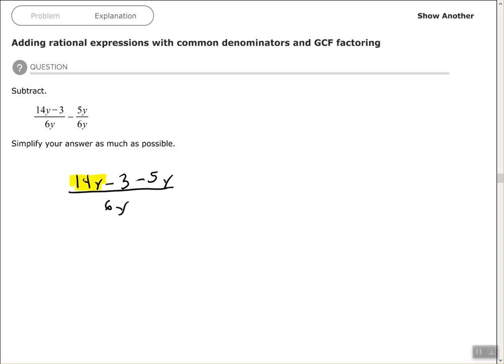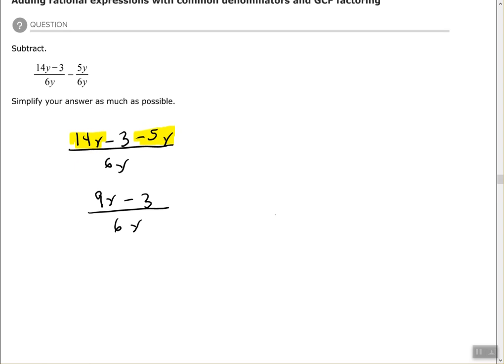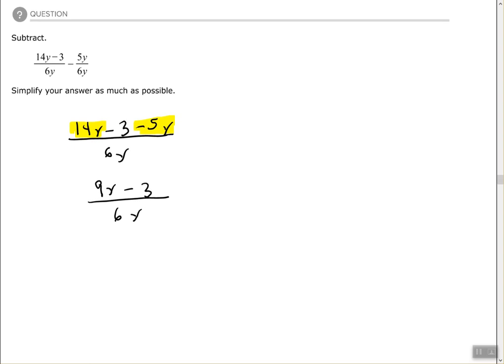The next thing we want to do is combine like terms. 14y minus 5y is 9y, so we have 9y minus 3 over 6y.